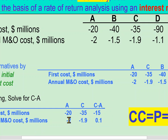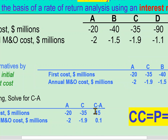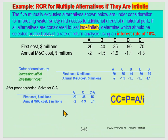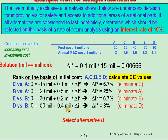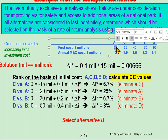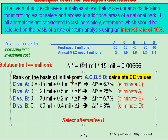Same thing with the annual cost: C minus A gives 0.1 million. Now, because we are doing incremental analysis, I only deal with these incremental values — negative 15 million for the first cost and 0.1 million for the annual. That is my concern going forward.